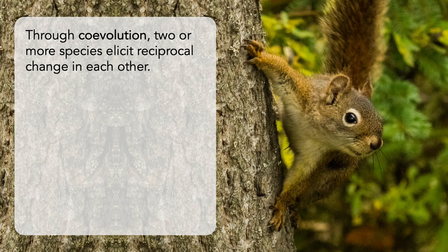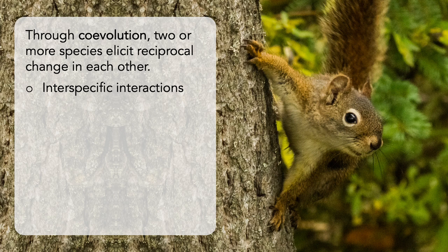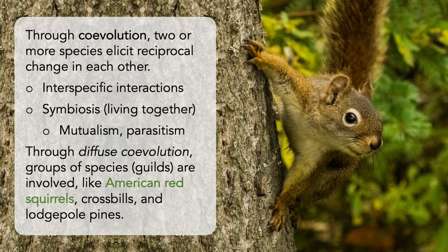Through co-evolution, two or more species elicit reciprocal change in each other. Short-term interspecific interactions like predation and pollination evolve through co-evolution. Longer-term interspecific interactions are called symbioses, meaning living together, and include mutualism and parasitism. Competition might be considered a short-term or long-term interaction depending on the context. Through diffuse co-evolution, groups of species or guilds are involved. A standard example involves American red squirrels, crossbills, and lodgepole pine, where cone morphology has evolved differently depending on the relevant seed-feeding community.